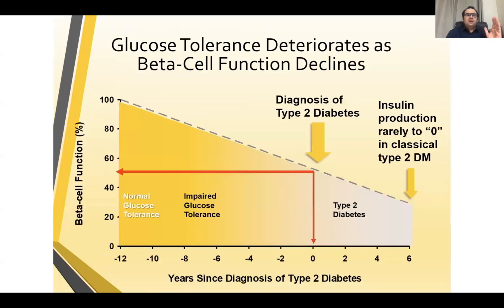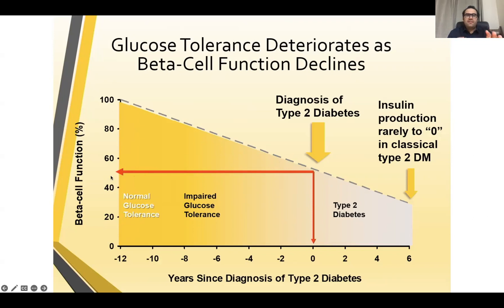Glucose tolerance deteriorates as beta cell function declines over time, and it takes many years for diabetes to develop. Whenever a patient has a new diagnosis of diabetes, it means that already eight to ten years have passed, with a period of impaired glucose tolerance and pre-diabetes when the patient was not detected. At this point the patient has 50% of beta cell function left and 50% is lost. That is why we have to start treatment as early as possible and try to reverse the diabetes.